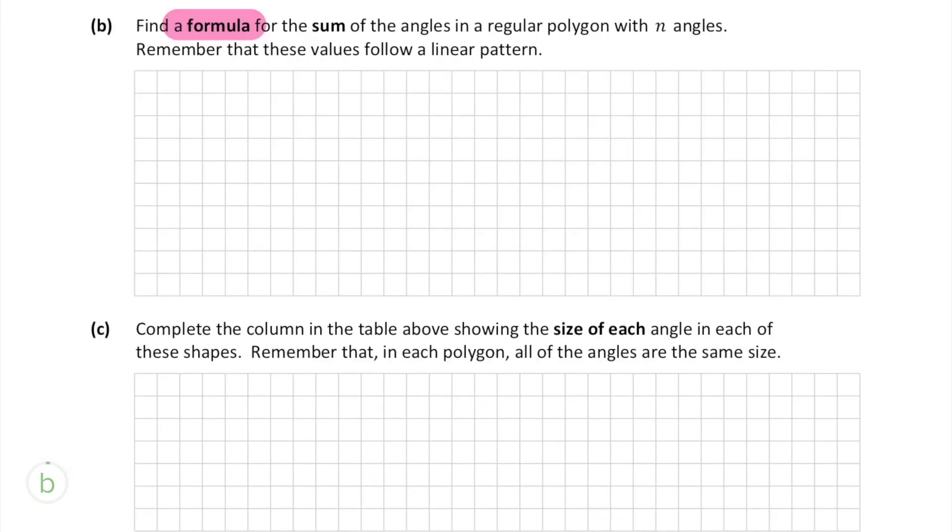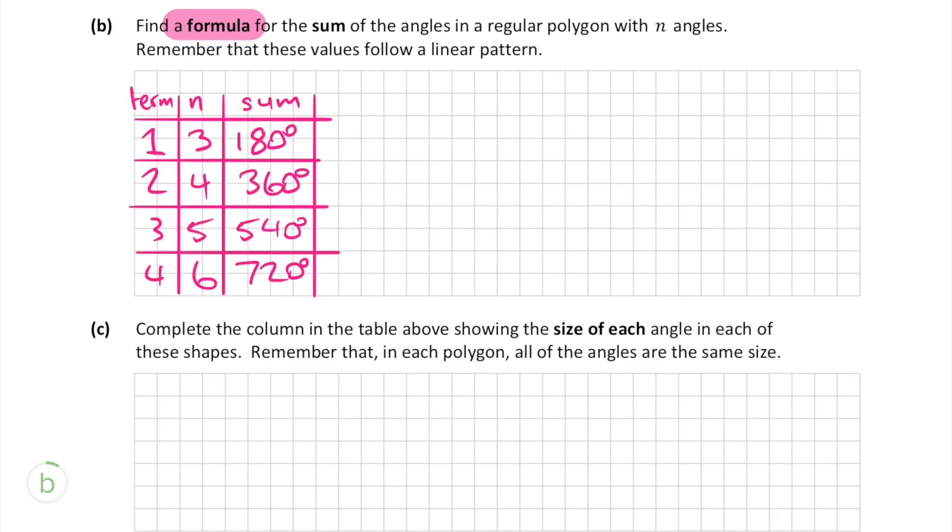In part B we have to find a formula for the sum of the angles which we already know is a linear pattern. To find this formula I recommend making a table such as this which allows us to visualize it a lot better. This also helps avoid confusion because the first term starts with n equals 3.